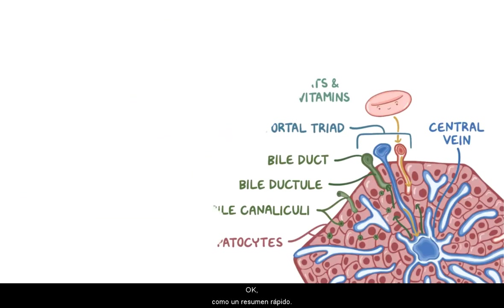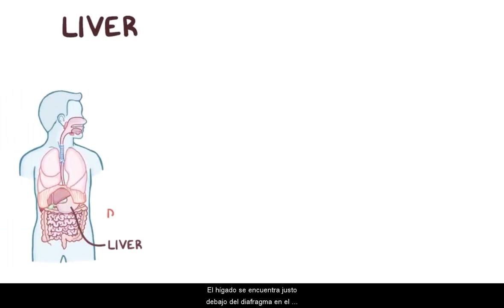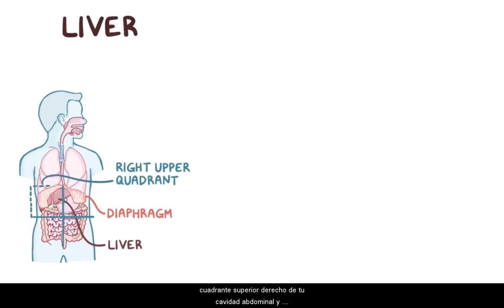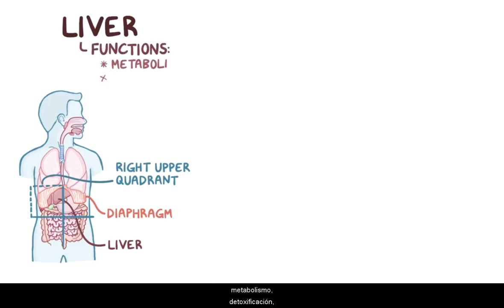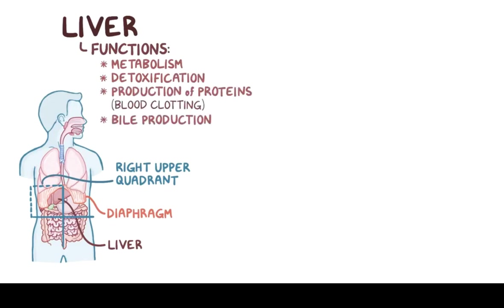Alright, as a quick recap: the liver lies just below your diaphragm, in the right upper quadrant of your abdominal cavity, and it has a wide range of functions, including metabolism, detoxification, production of proteins important for blood clotting, and bile production.